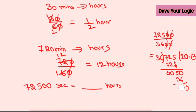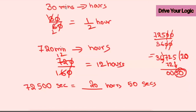So the answer works out to 20 hours, with some minutes and seconds remaining — approximately 50 seconds left over. If you prefer, you can keep the remainder in seconds. So the final answer is 20 hours and 50 seconds. Just remember the main process: whatever is left after dividing can be expressed as the smaller unit.